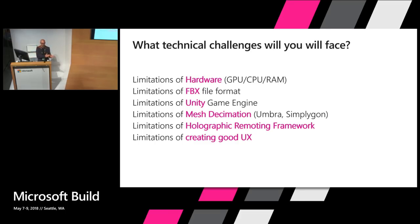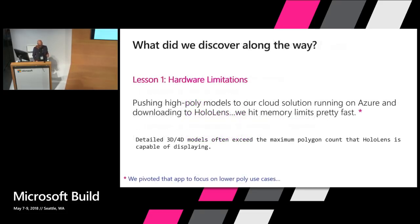We also looked at mesh decimation technology as an alternative. The core of our technology here is called the holographic remoting framework. We tried using tools like Umbra and SimplyGon to basically take snapshots from our model at different critical moments in the timeline — beginning, middle, end, or any milestone date the customer wanted. We would push that up to the cloud, decimate the models, bring them back down, and create this app experience for the customer. The problem was it just was not a scalable solution. You're going to have to look at an alternative solution and not load that content directly to the device — you're going to have to start thinking about how to stream graphics from an engine to the HoloLens.